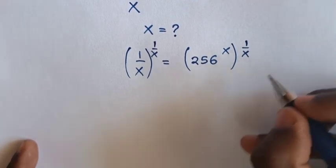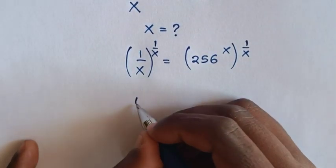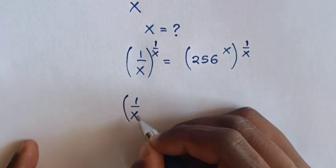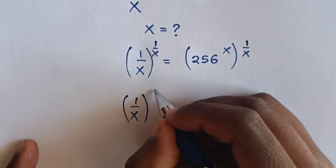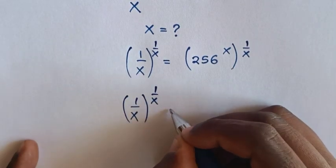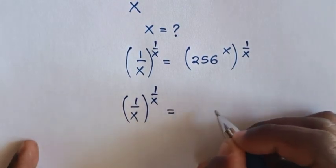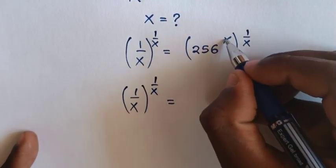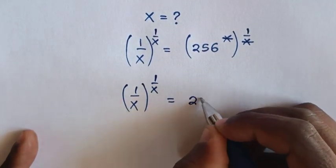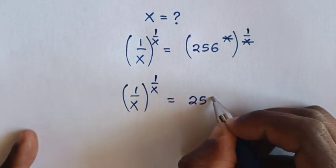So our equation will be 1 over x, bracket power of 1 over x, is equal to — this power of x will cancel with this x — then it will be 256.